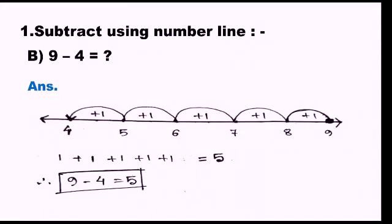Dear students, let us start question 1b: subtract 4 from 9 using a number line. First draw the number line. I have used the second procedure, which works for large numbers as well as small numbers. I have started with the subtrahend, which is 4, then moved to the minuend, 9. We count the jumps: 1 plus 1 plus 1 plus 1 plus 1 equals 5. So 9 minus 4 equals 5.